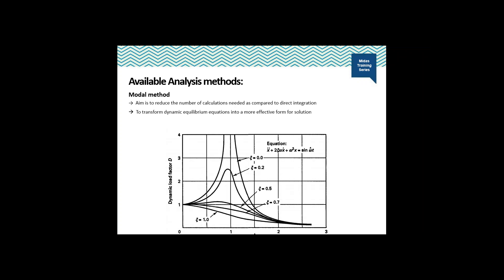The response is to be obtained over many time intervals. The aim of this method is to reduce the number of calculations compared to the direct integration method, and the dynamic equilibrium equations are transformed into a more effective form of solution. Looking at the image, the maximum response is generated at a frequency ratio between about 0.5 and 1.5, so most of the participation happens in that range and that can be studied by the modal method.